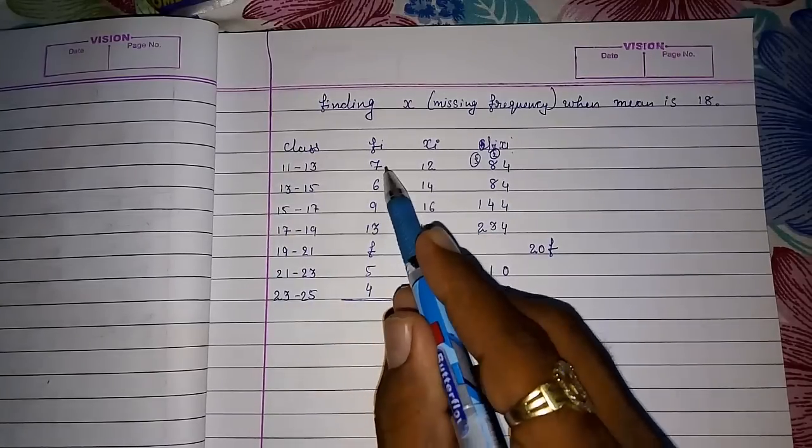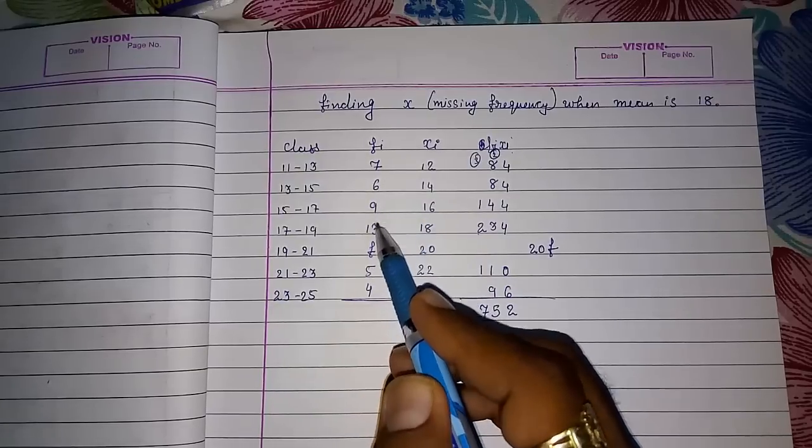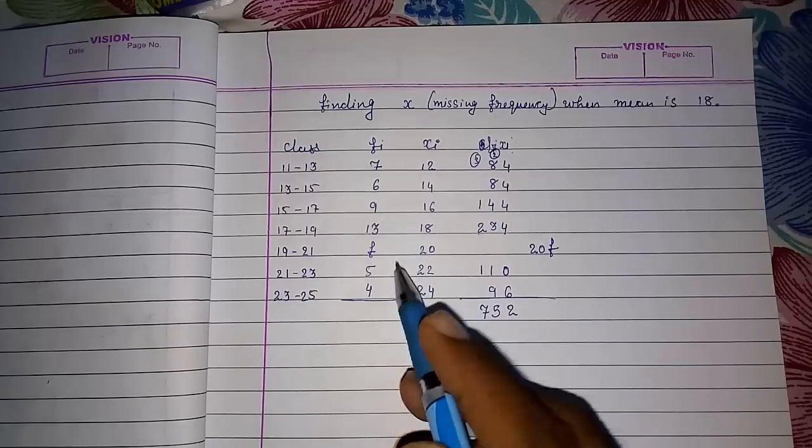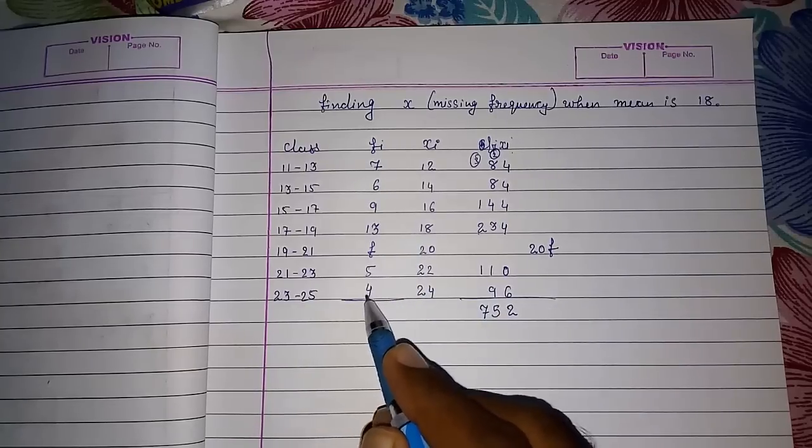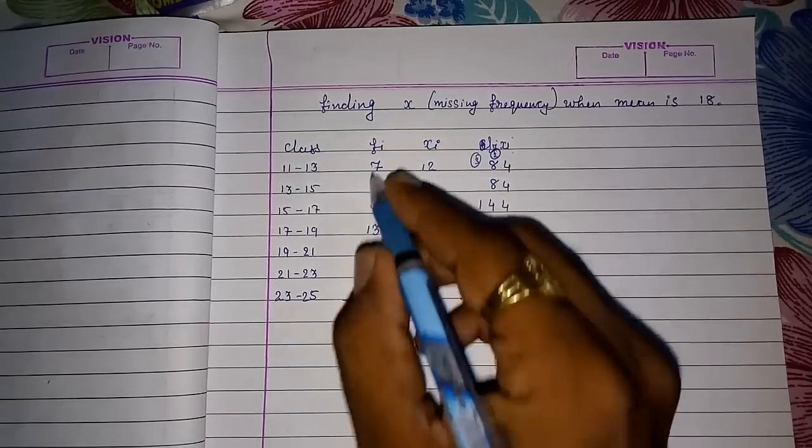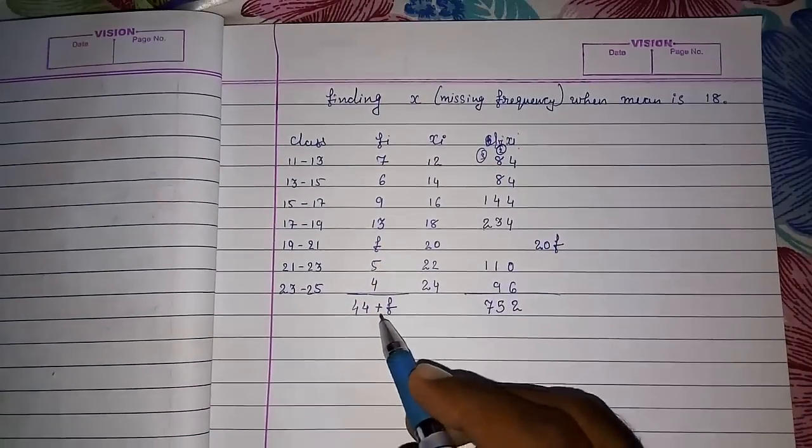And the sum of this also we have to find out now. So 6 and 6 is 12, 13, 13 and 13 is 26, 26 and 9 is 35, it's 40, 44 plus F.